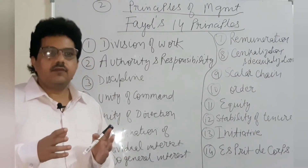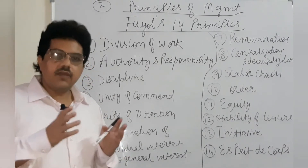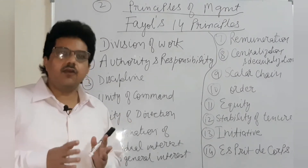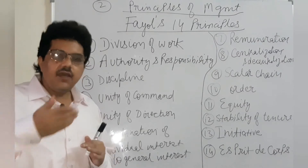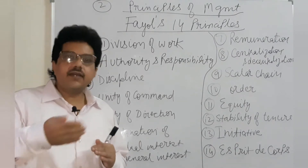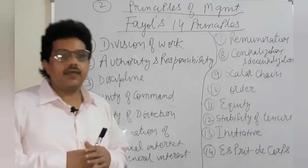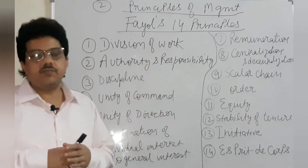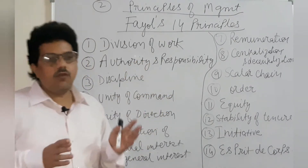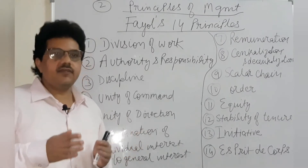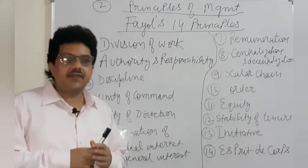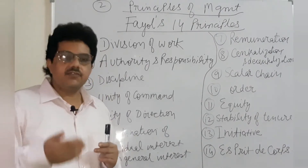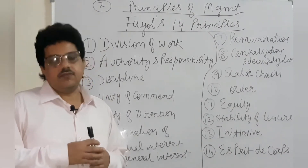He studied how the employees are working in the organization, why mistakes are happening, why targets are not being achieved. On that basis he gave these 14 principles, which are followed by organizations. They have flexibility and can be applied depending upon organization to organization.